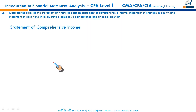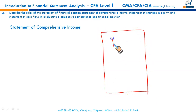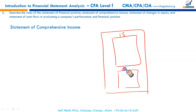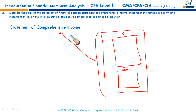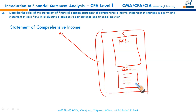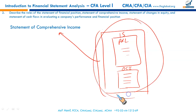Moving on to the statement of comprehensive income, which has two parts. The first is the normal income statement — also called profit and loss account or statement of operations — which you are quite familiar with. The second part is called other comprehensive income, or OCI. Collectively, this is called the statement of comprehensive income. OCI is basically a set of certain transactions so unique and different that they cannot be reported as part of the profit and loss account.